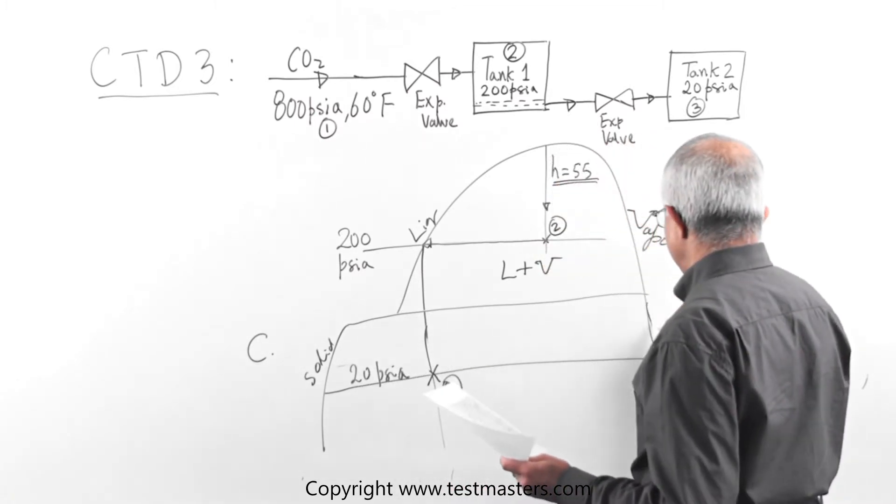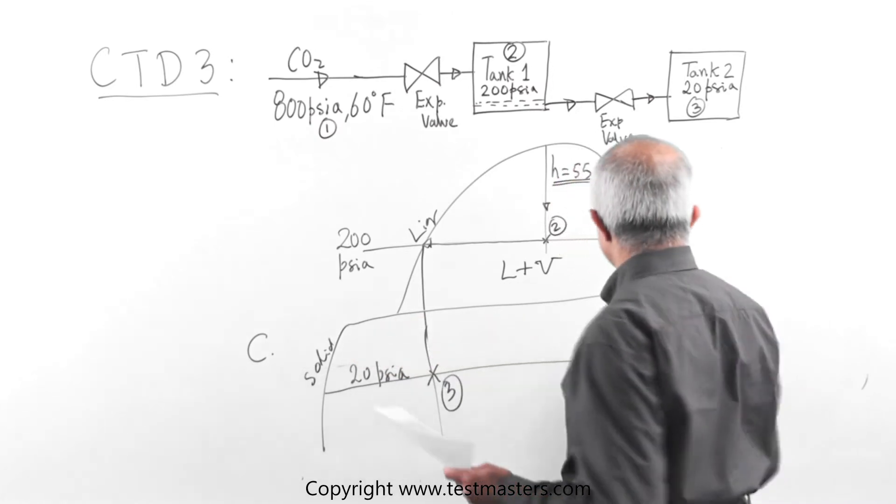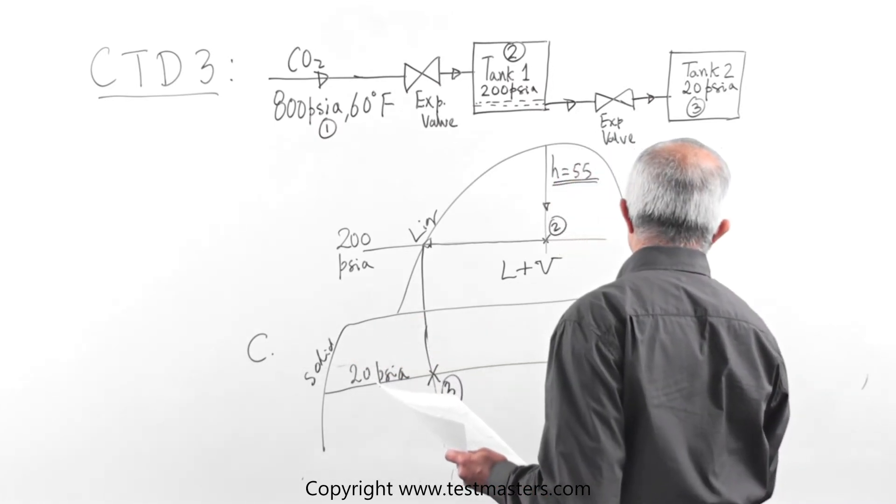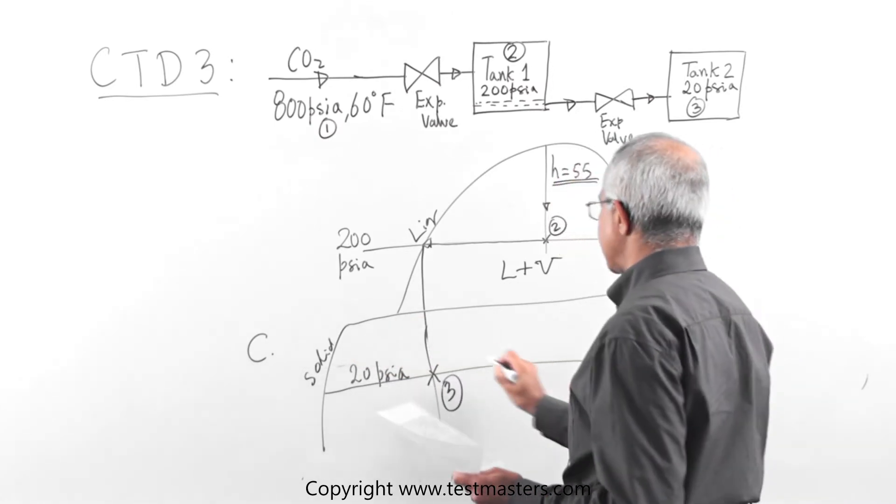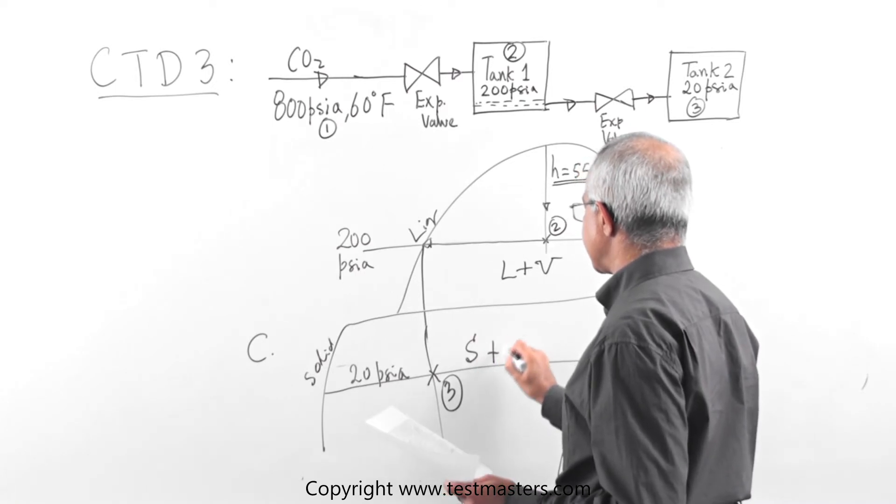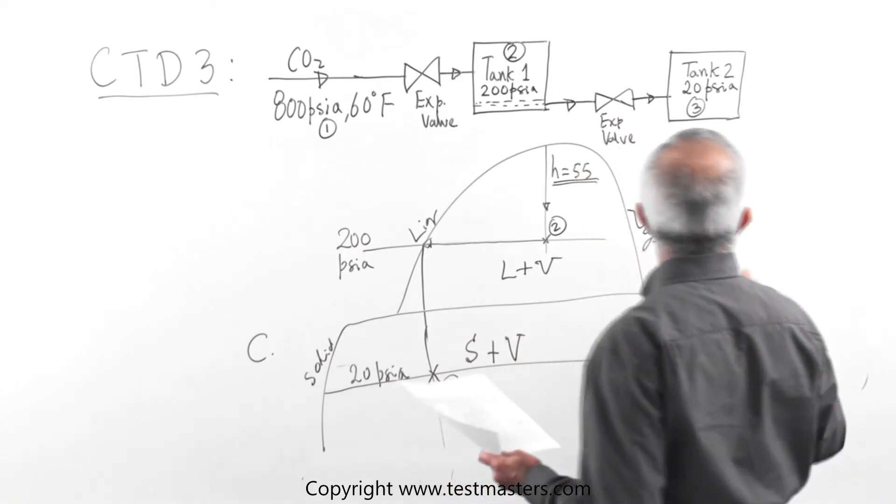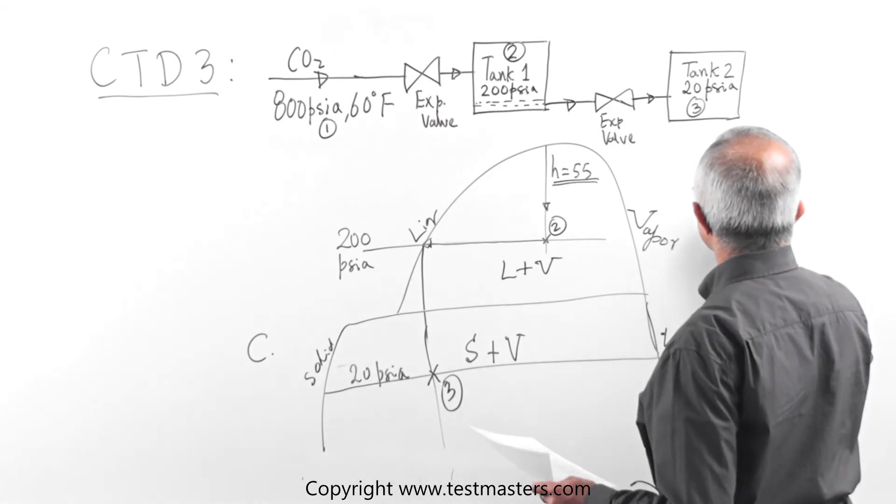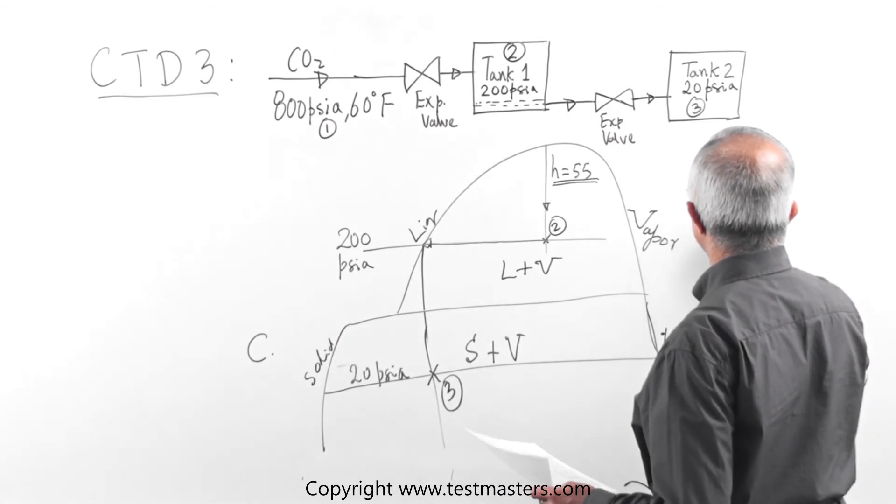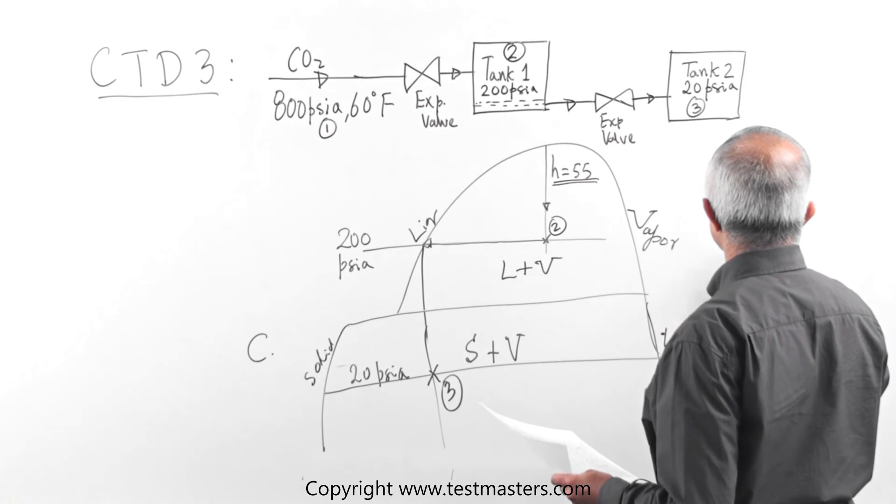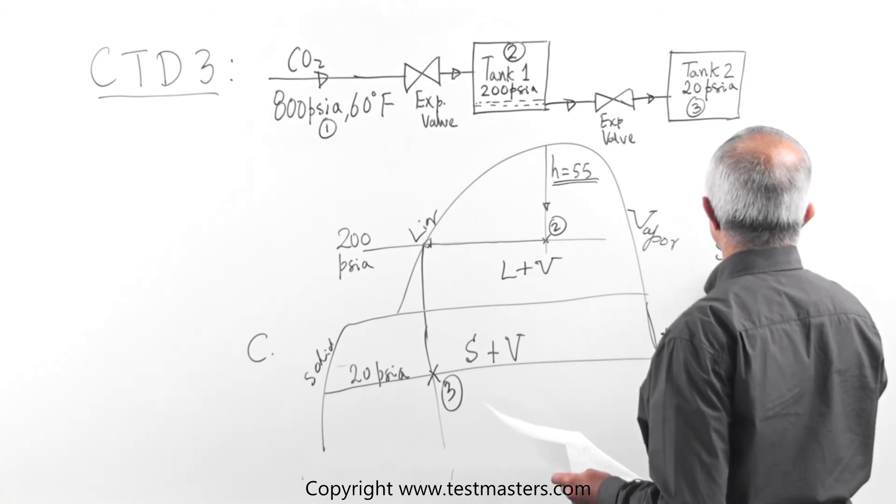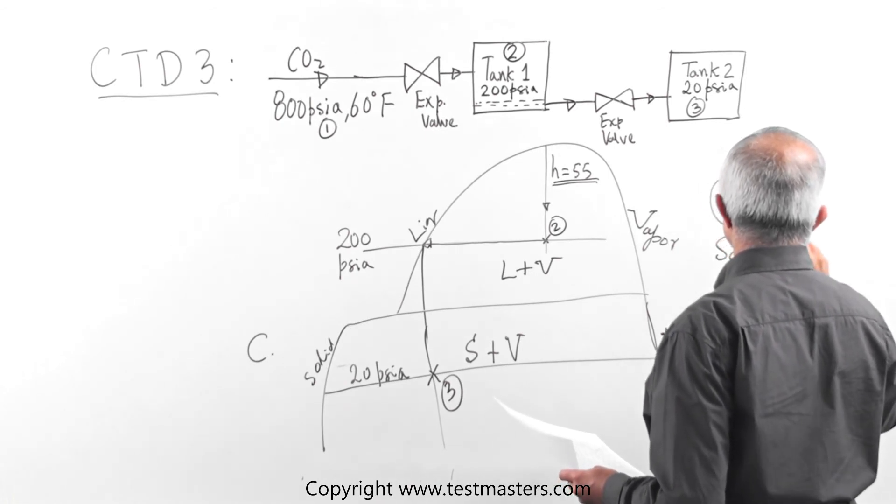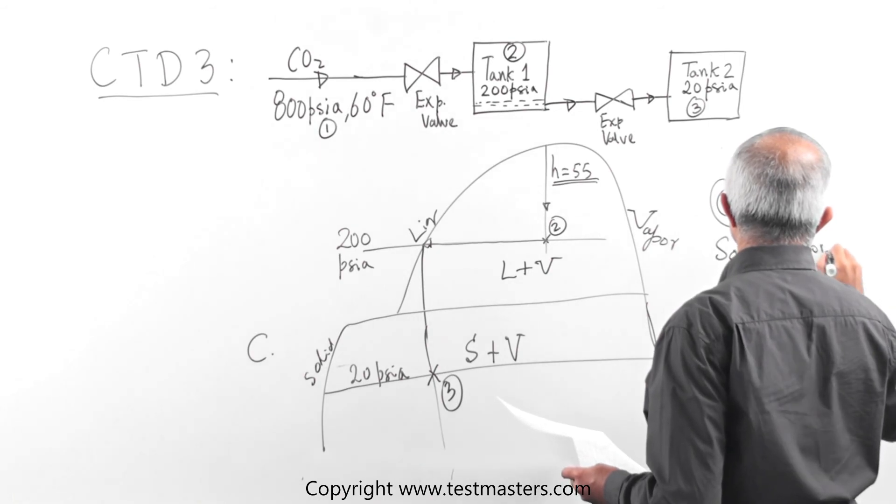What do you see in state 3? So this is solid and this is still vapor. So it will be a solid vapor mixture. So how do you give the phase description? This is part C. The phase description. So for part C, the phase description is solid vapor mixture.